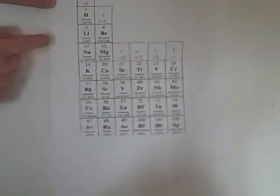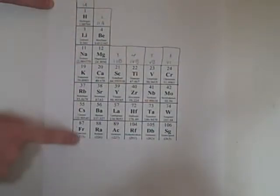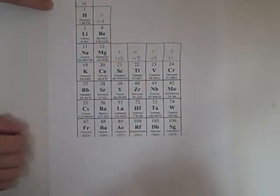These are your periods, which show your energy levels. These are your groups. That will show how many valence electrons you have.